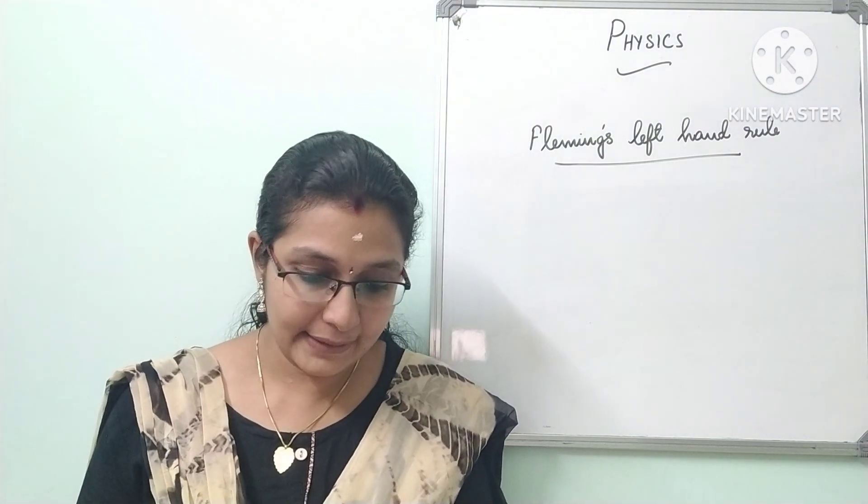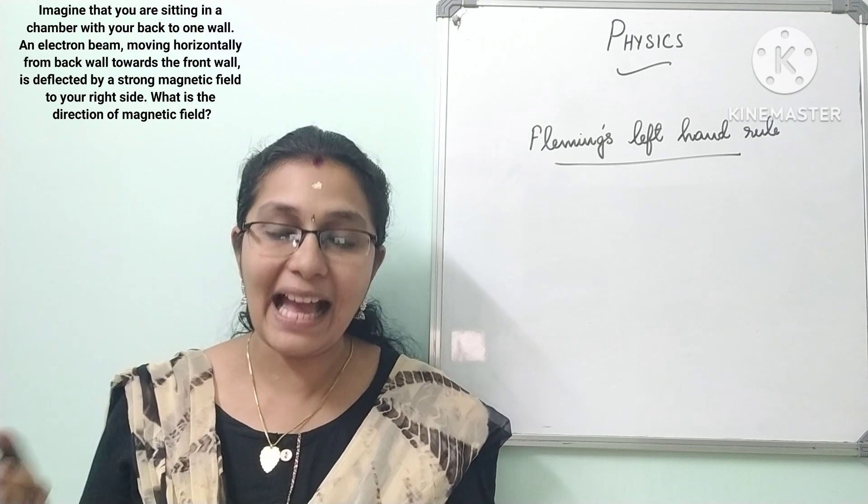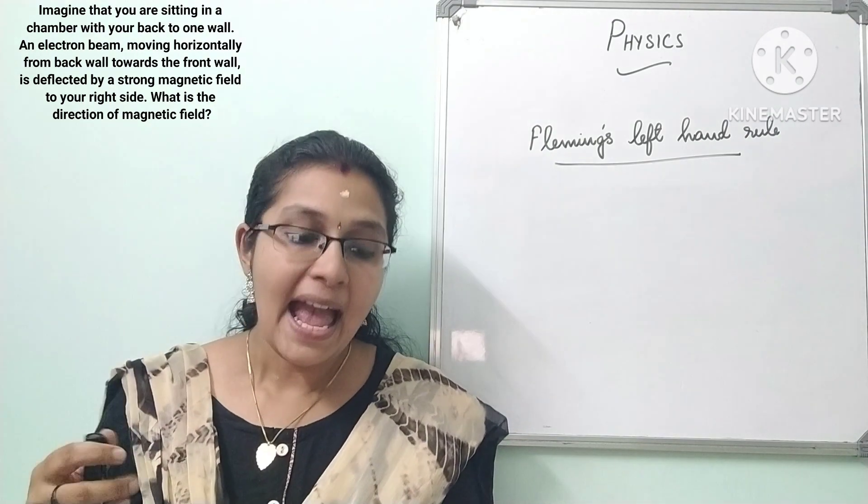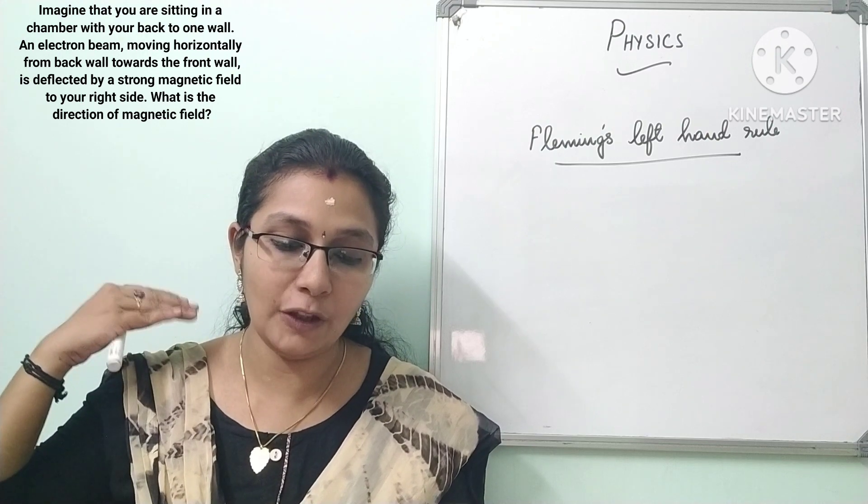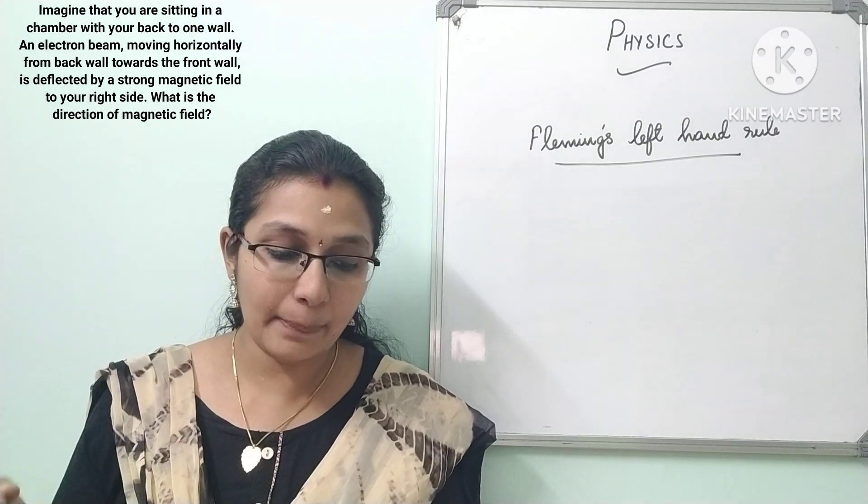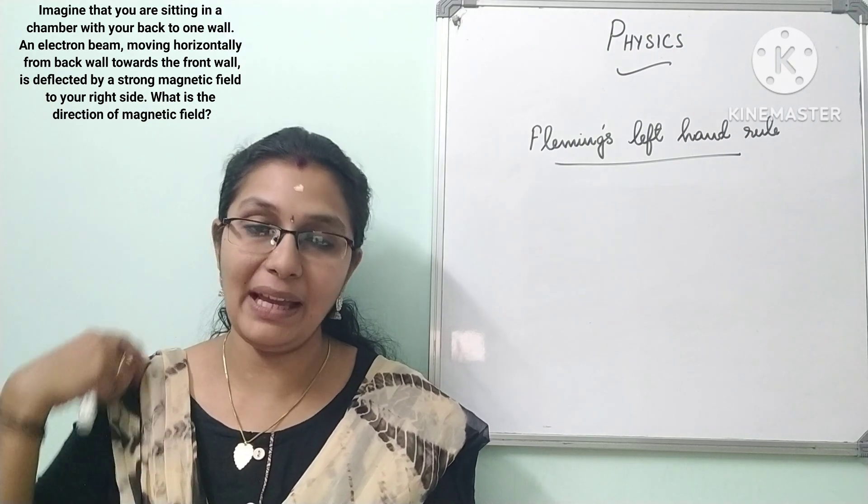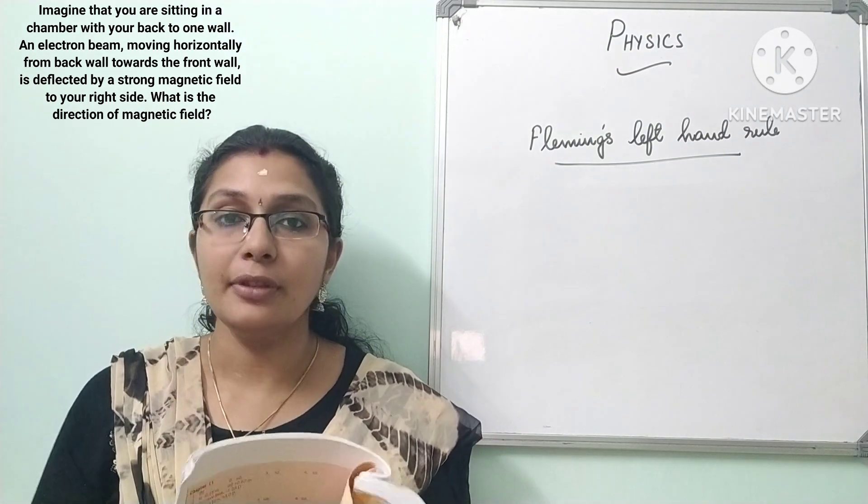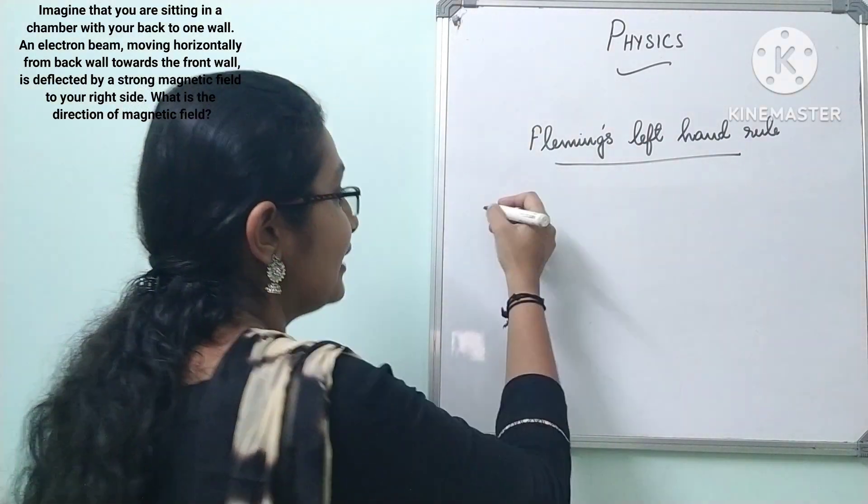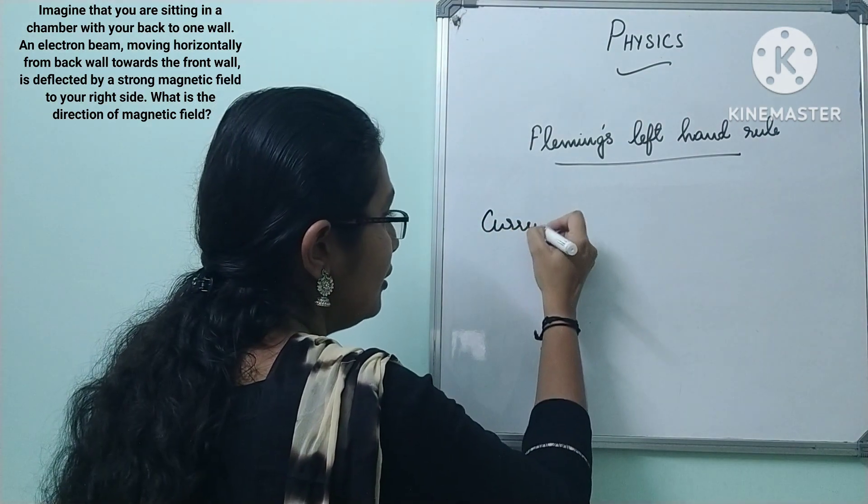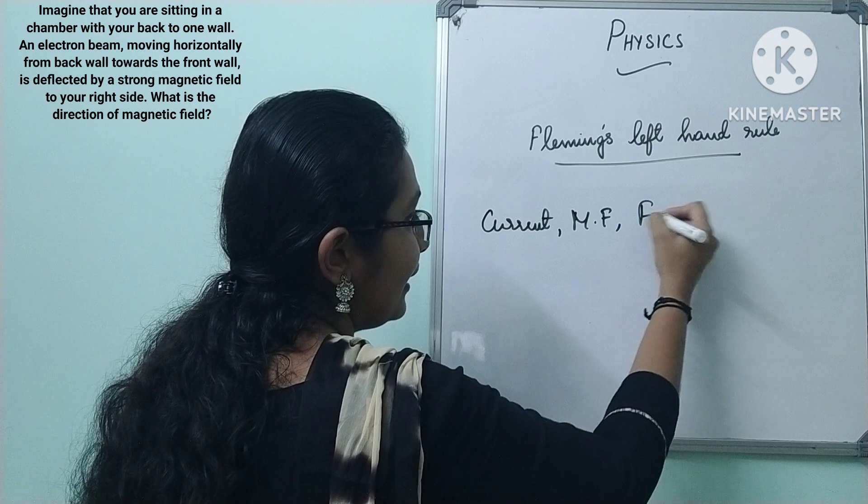The question is: Imagine you are sitting in a chamber with your back to one wall. An electron beam moving horizontally from the back wall towards the front wall is deflected by a strong magnetic field to your right side. What is the direction of the magnetic field? First, we will understand what is given and what you have to find. Generally, we consider three things: current, magnetic field, and force.